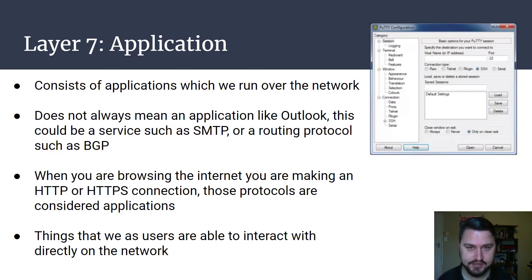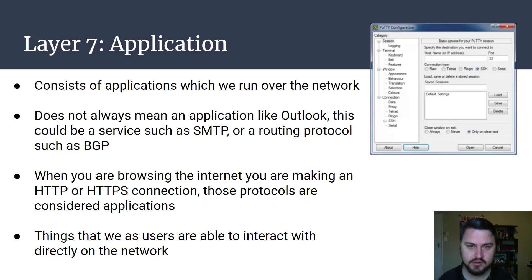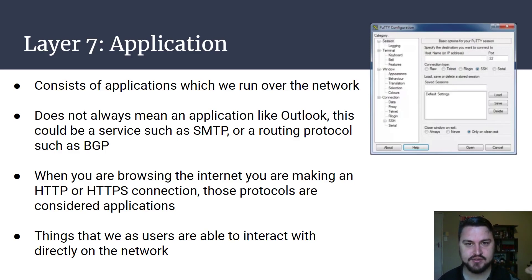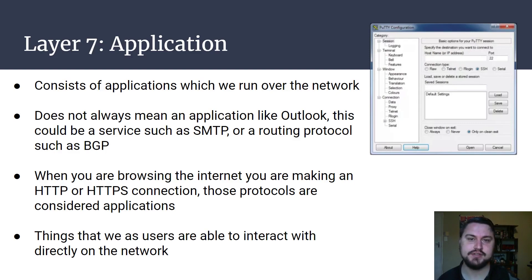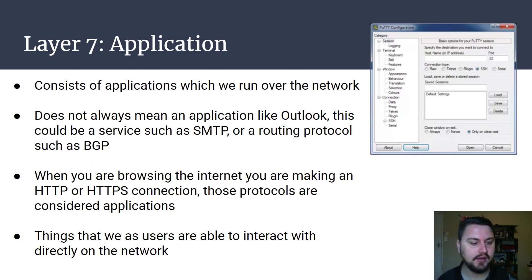The last layer is the application layer. This is what we actually use to input directly into the network. It's not necessarily just things such as Outlook — it can be different protocols as well. SMTP, which we use to send email, is an application. BGP and OSPF that I talked about in the network layer — those are also applications that have a function for how they work to get traffic on or over the network. HTTP and HTTPS are applications too. So when you go to a website and browse, that is you using an application in your browser. These are the things we actually use to interact with directly on our networks.